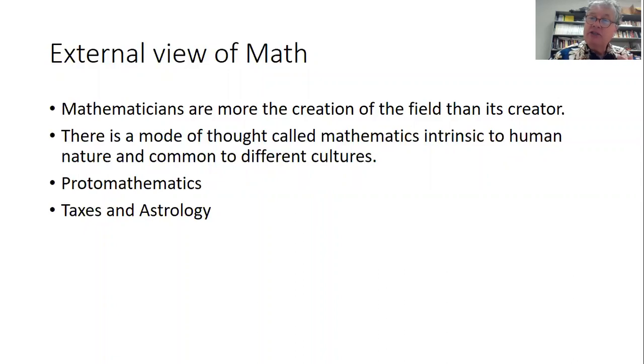In an external view of mathematics, mathematicians are more the creation of the field than its creator. There isn't transcendental truth, but distinctive practices, skills, and activities that mathematicians do at particular times and places. What was normal for Mesopotamia in 2000 BC? That's what we want to get at. I don't want to define what mathematics is.